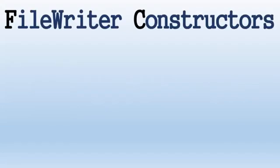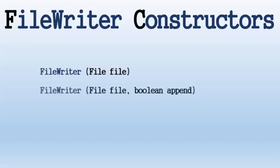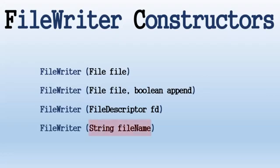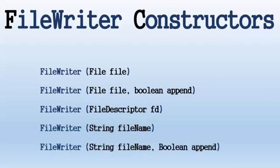FileWriter constructors are used to create FileWriter objects. The first constructor requires a File. The second constructor requires a File and a boolean. The third constructor asks for a file descriptor. The fourth constructor asks for a string. And the last constructor asks for a string and a boolean.